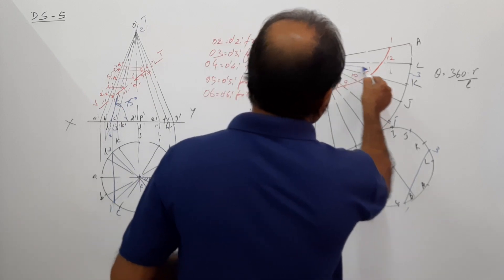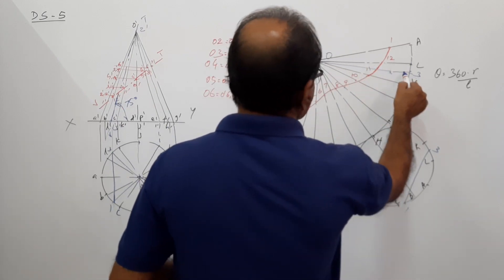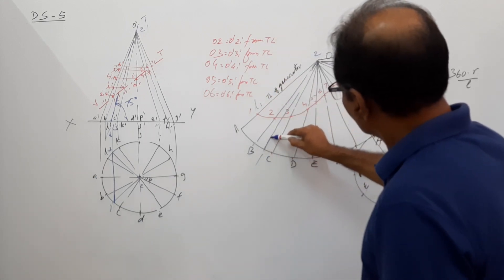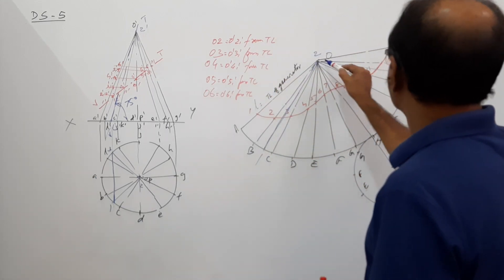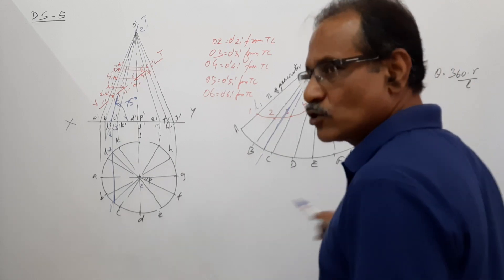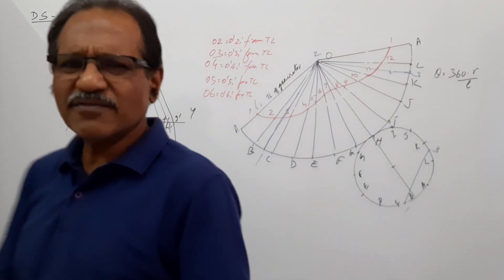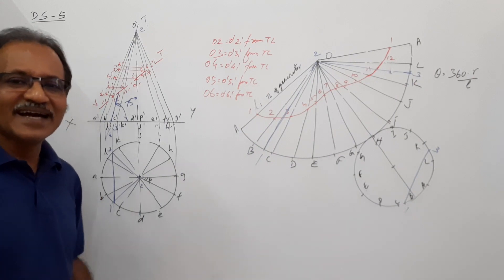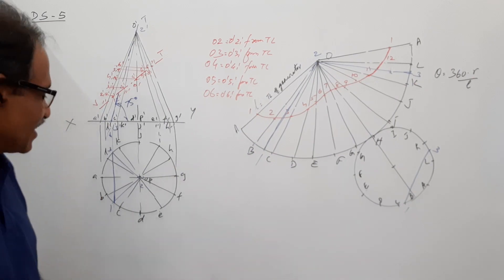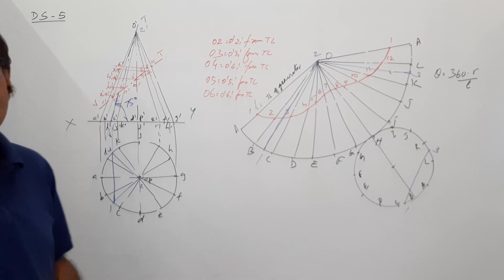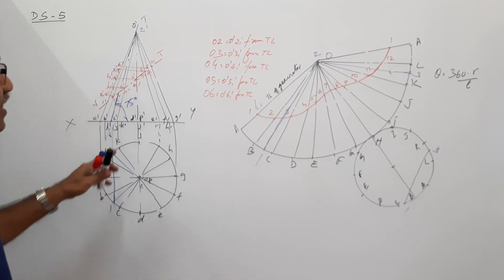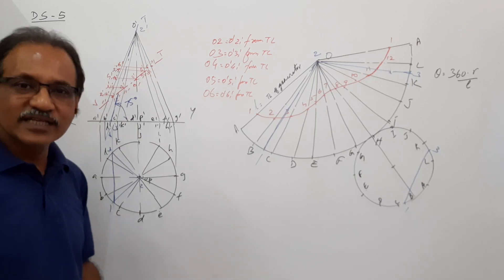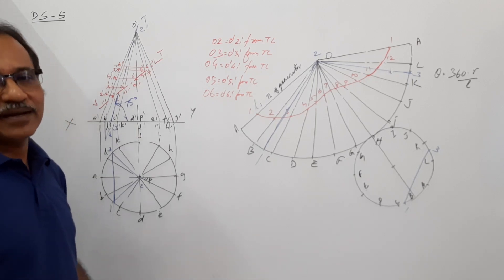Connect 1 to 2, 2 to 3, and 1 to 3 as straight lines — very simple. Such a question I don't expect for your university examination. This is what you call the third cutting plane.